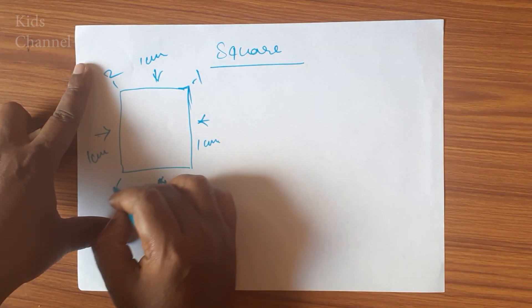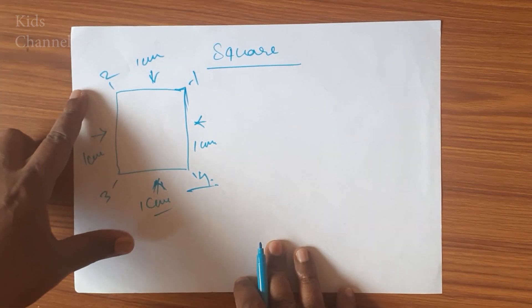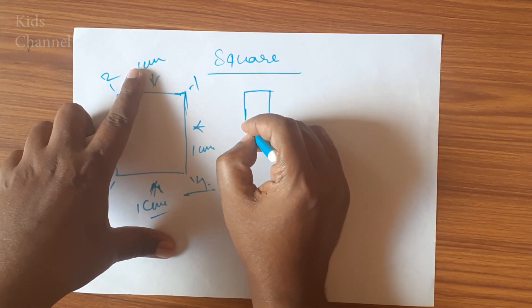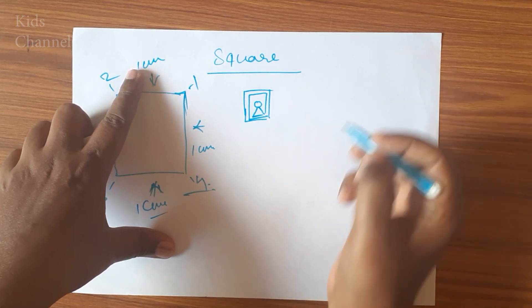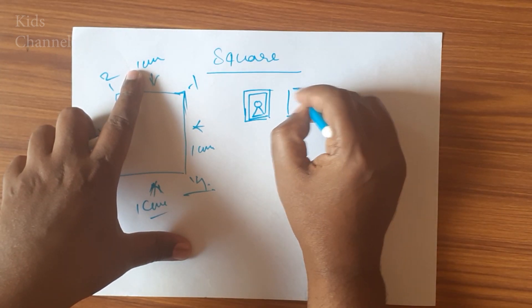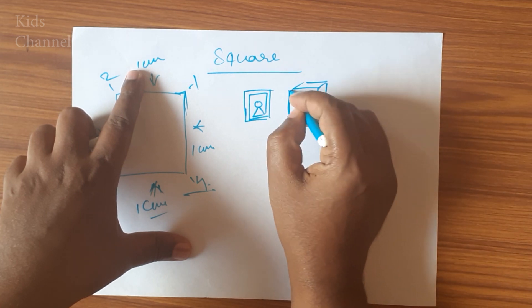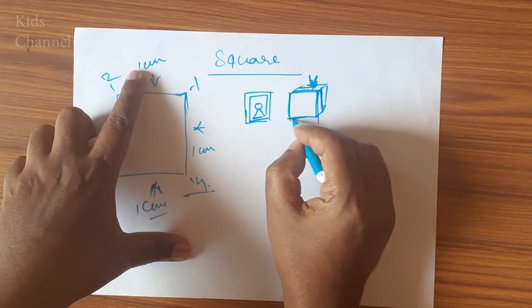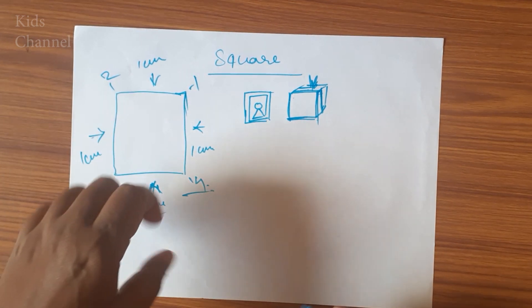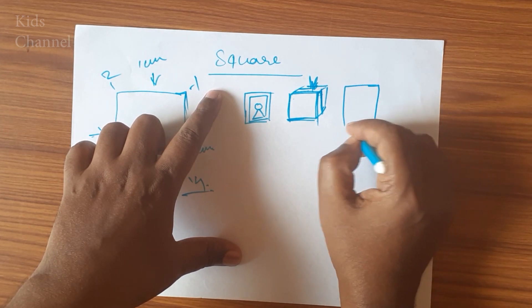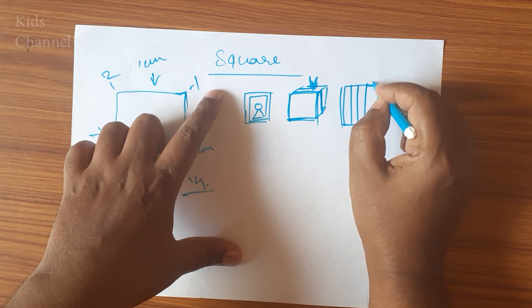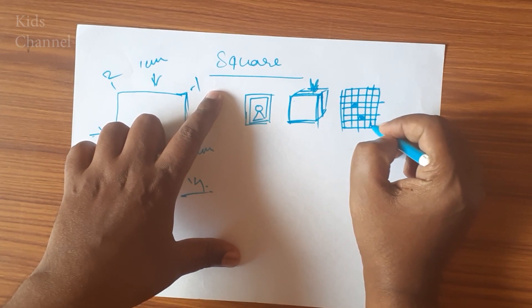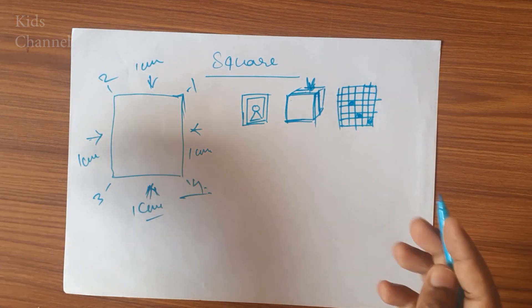It has four corners: corner 1, 2, 3, 4. Now, some objects are in a square shape. Some photo frames are in square shape. And a gift box — the front view of some gift boxes is in a square shape. And a chess board is in a square shape. Square shape means you can easily tell that all sides are equal.